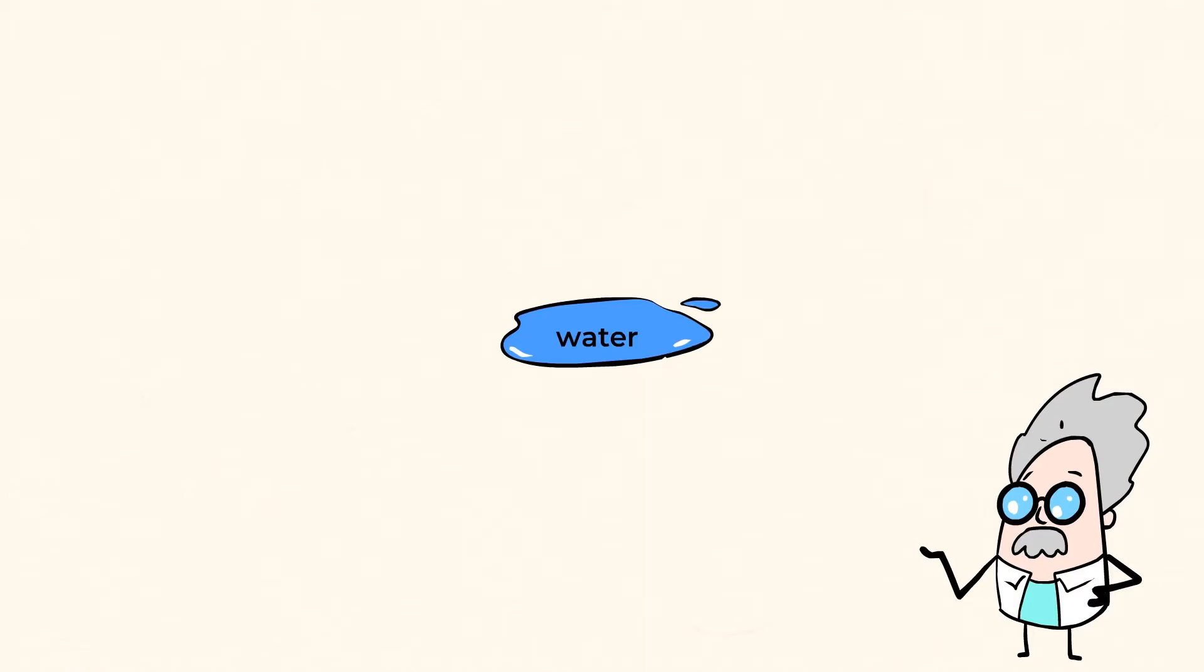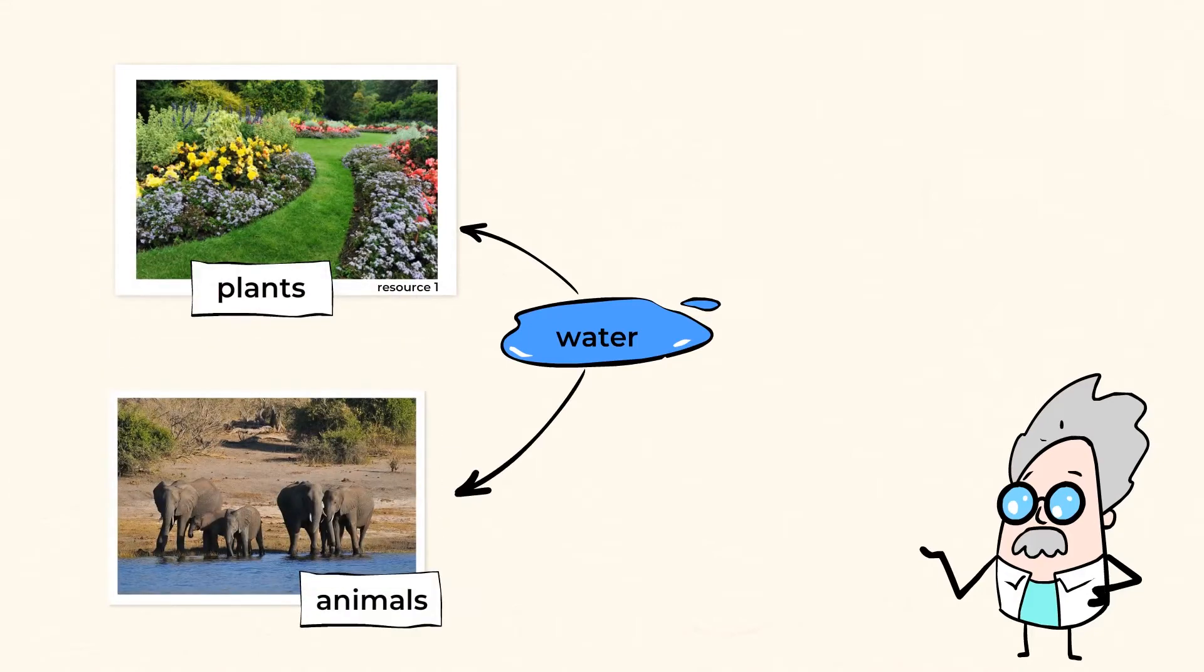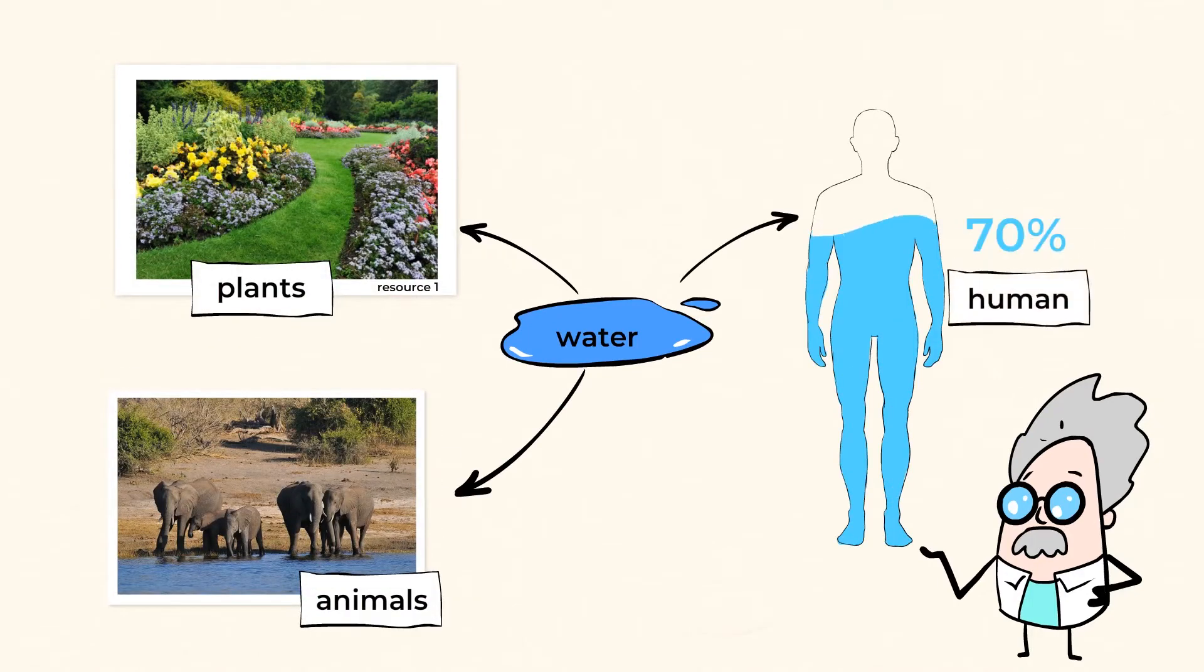Every living thing on Earth depends on water to survive. The plants in your yard need water. Animals need it to drink. Humans are made up mostly of water, so we need it to stay healthy and we also need it to stay clean.